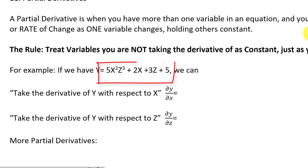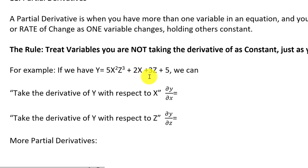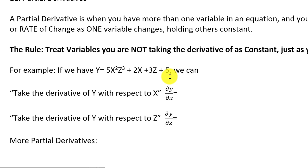Suppose we have this function y affected by two variables x and z: y = 5x²z³ + 2x + 3z + 5. There are two different partial derivatives we might be interested in. One would be the partial derivative of y with respect to x — how y changes when we change x. The symbol we use, instead of a regular d, is a curly d — it's actually a d in the Cyrillic language. In this class, you don't have to use the curly d notation, but in textbooks you'll see it used for partial derivatives.